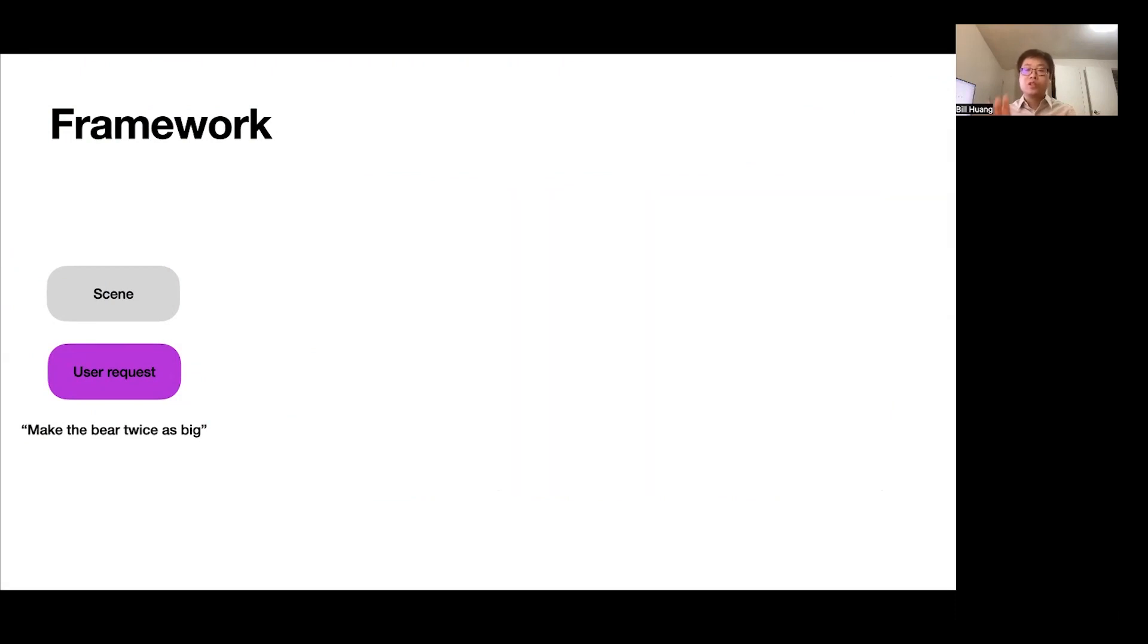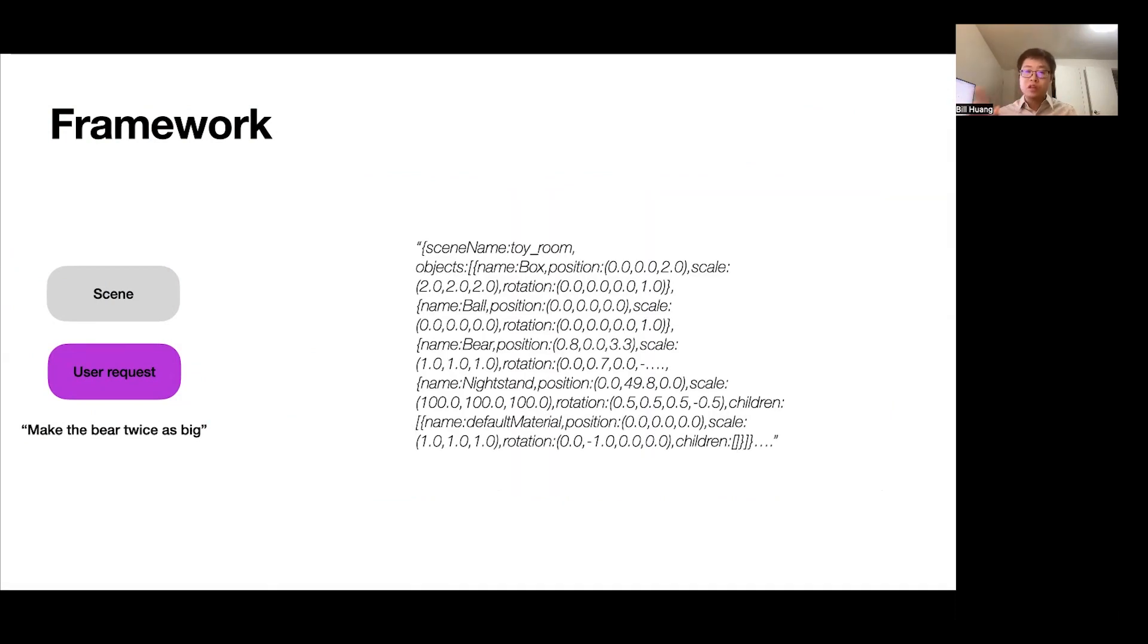So basically needs to be able to locate this bear among the many objects in this room. To be able to achieve this, we first parse the room into a string representation containing all the objects, their names, location, and relations, and we use this string as input to a module called the scene analyzer. The scene analyzer will then try to locate the relevant object and then use that as the output.